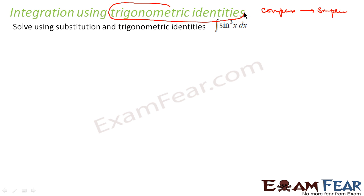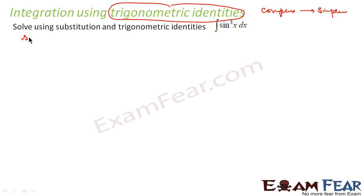When I am saying integrate using trigonometric identities, we will use trigonometric formulas as such. For example, this question I will try to solve using trigonometric identities first. I can solve this particular question using substitution also, but let's try using trigonometric identity first. For this, I have sine cube x.